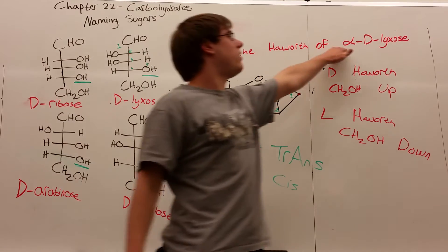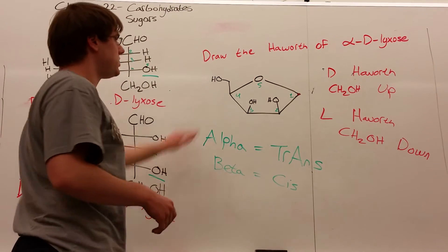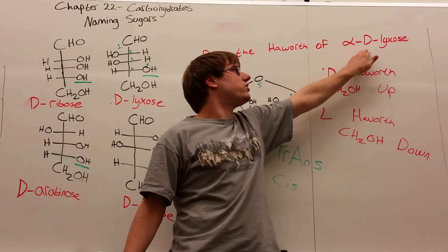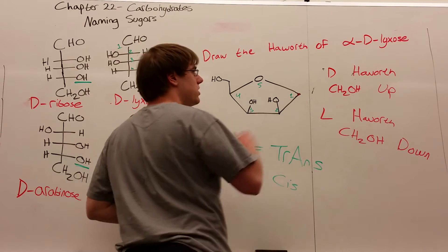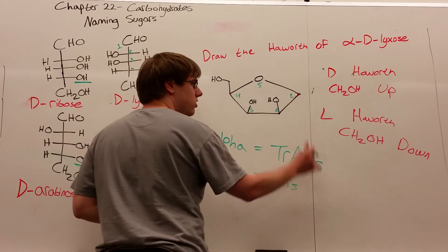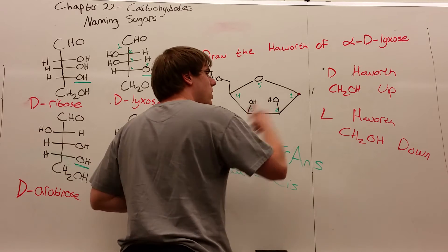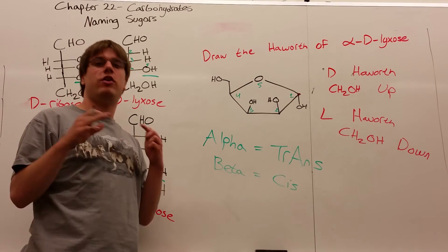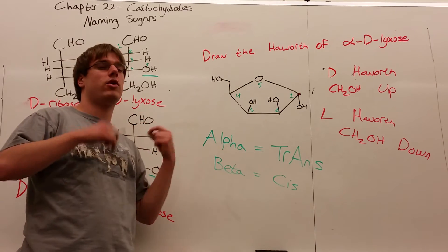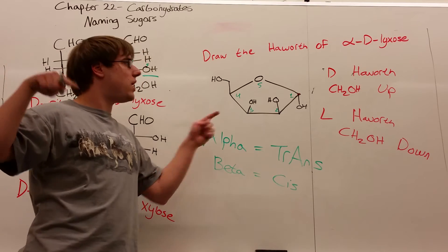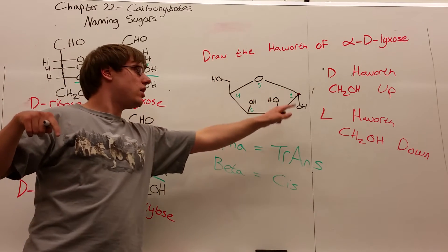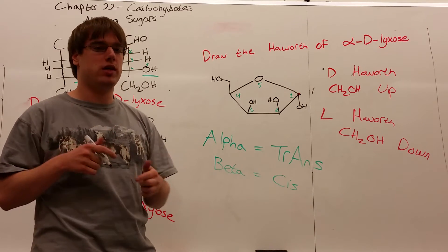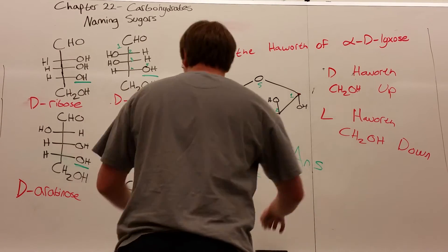For alpha-D-lyxose, the CH2OH group points up because it's a D sugar. Therefore, the anomeric OH must point in the opposite direction because alpha is trans, so that OH points down. This is why in the previous video we didn't have enough context to say whether the anomeric OH was up or down—I drew squiggly lines. But now we're told alpha, so we know which position the anomeric OH is in.